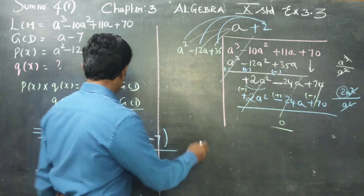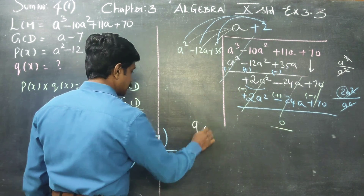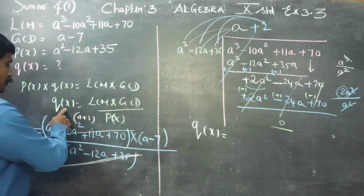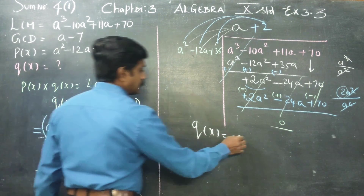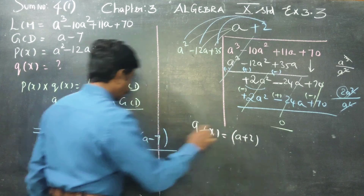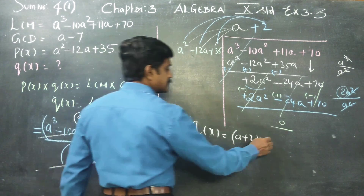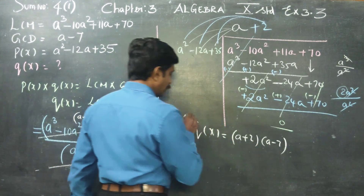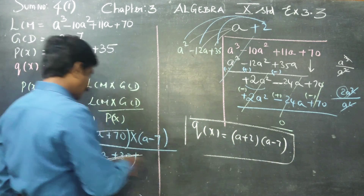Therefore my final answer will be: Q of X is equal to A plus 2 into A minus 7. The denominator will cancel out.